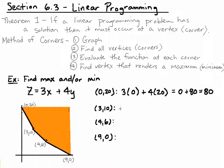At (0,20): 3(0) + 4(20) = 0 + 80 = 80. Then we plug in (3,10): 3(3) + 4(10) = 9 + 40 = 49.